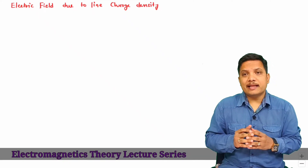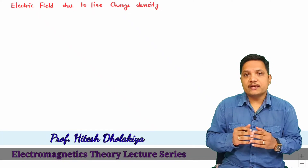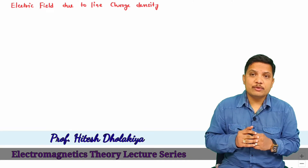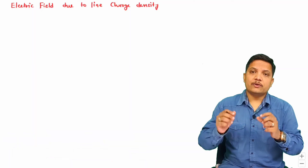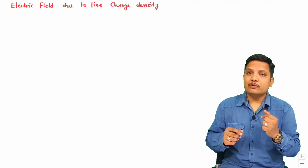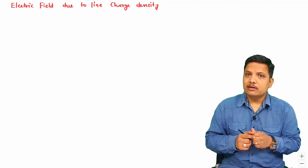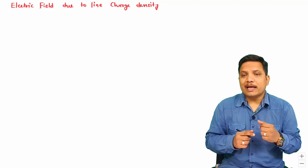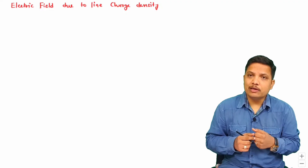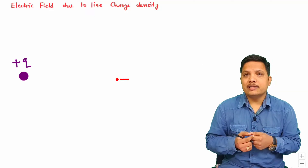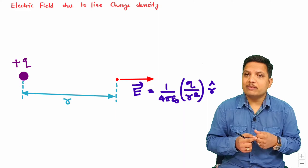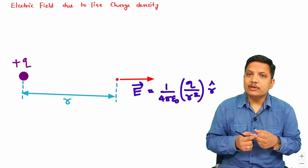Welcome to the electromagnetics theory lecture series. Professor Dulakia is going to explain electric field due to line charge distribution in this video. We will calculate this based on electric field due to point charge, which I have already explained — that is 1 by 4 pi epsilon 0 into charge divided by square of the distance into unit vector r.